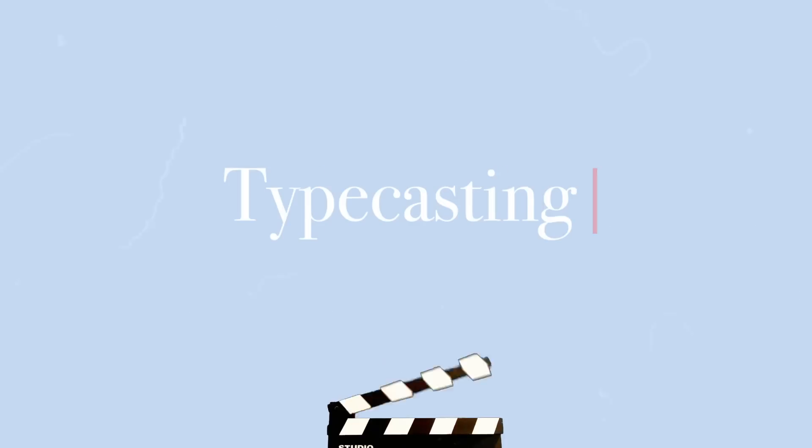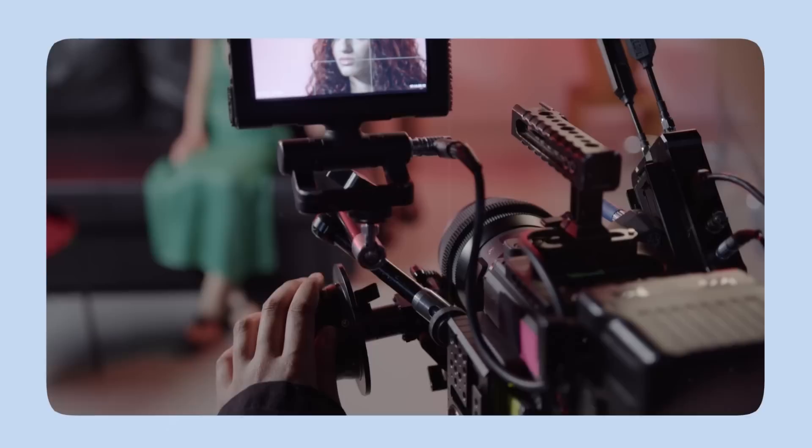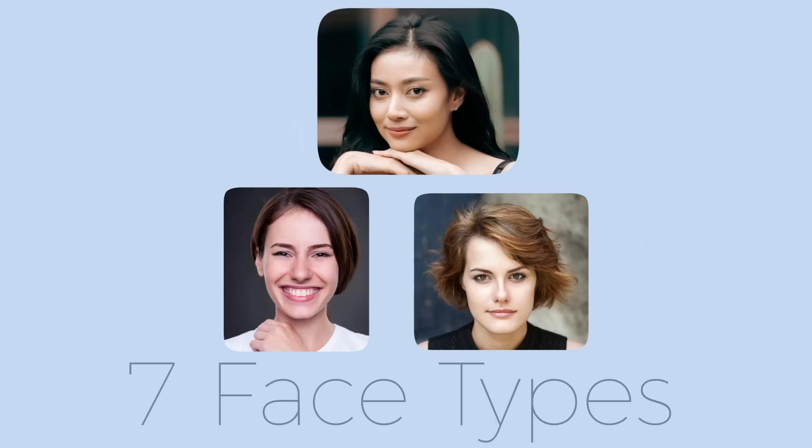Typecasting is a simple storytelling technique — a way to convey something you are inherently supposed to know about a character without them having to explicitly tell you in a scene. Whether you're an actress or not, knowing how you appear to others before you even open your mouth can be used to your advantage. In this video, I'm going to break down the seven face types, the roles they often get cast in, and how you can use this to inspire outfits you wear on a daily basis. My name is Ellie Jean; I'm a style consultant, and on this channel we find our style by finding ourselves.